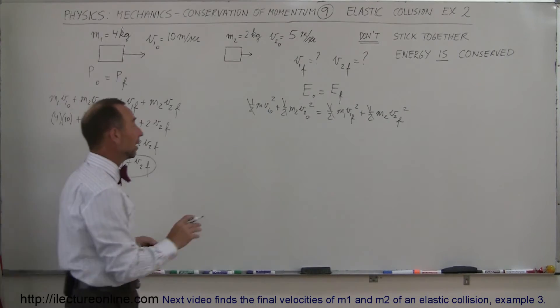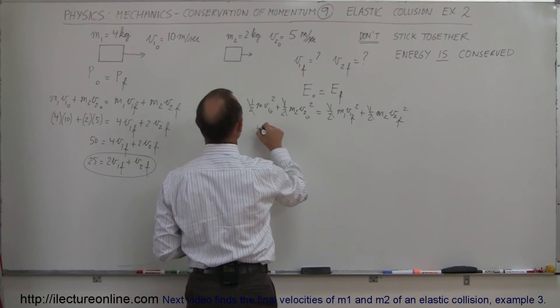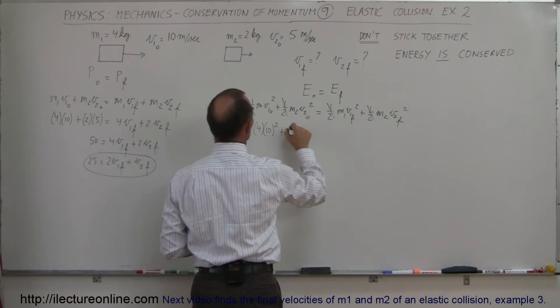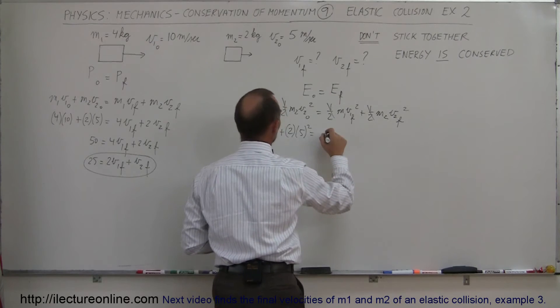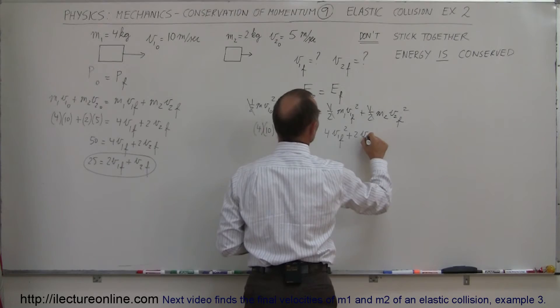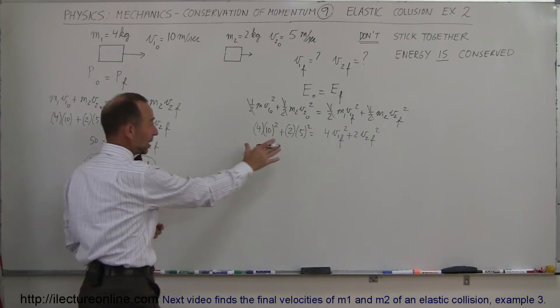Doing the same on this equation right here, we have, that would be 4 times 10 squared plus 2 times 5 squared equals, so that would be 4 times V1 final squared plus 2 times V2 final squared. And again, doing this exact same thing here, we're going to simplify.